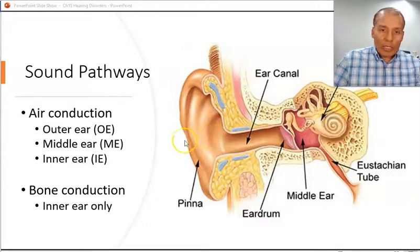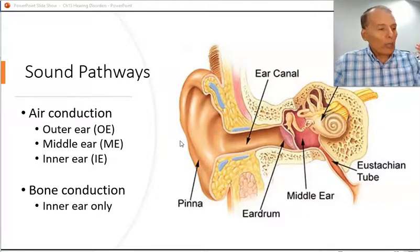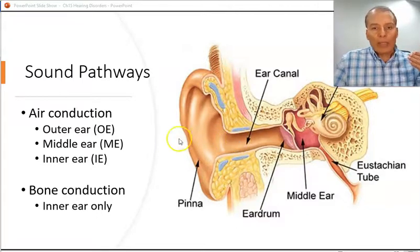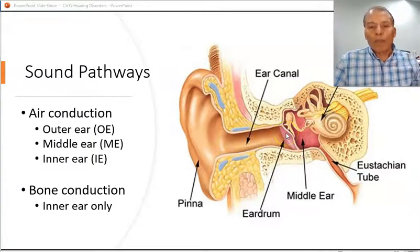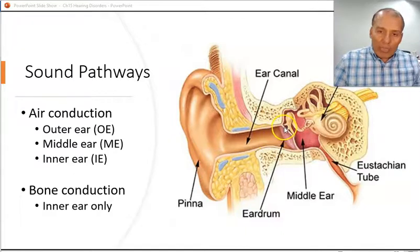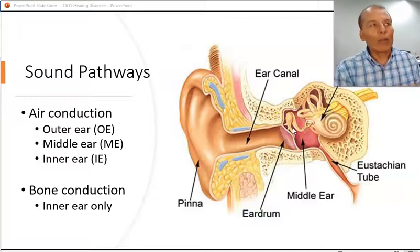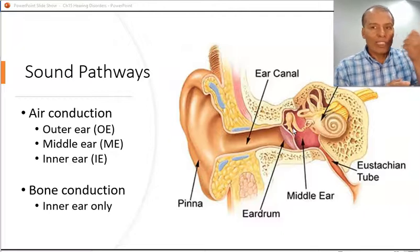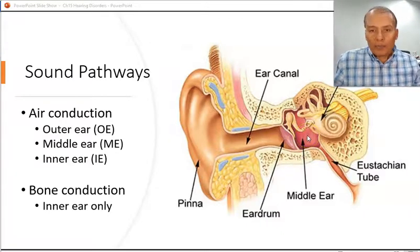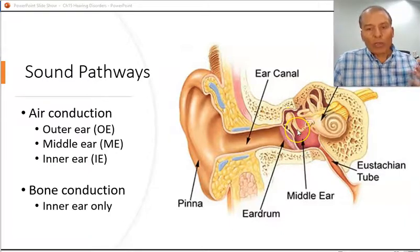The outer ear receives the auditory signal as an acoustic pressure wave and conducts it to the eardrum. The eardrum and the ossicles transform the acoustic signal into mechanical energy — meaning physical movement going back and forth. So the middle ear transforms acoustic signals into mechanical energy.